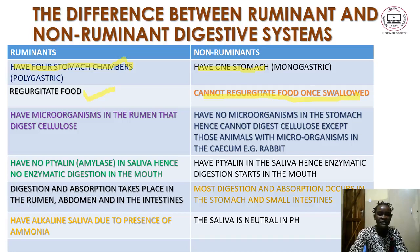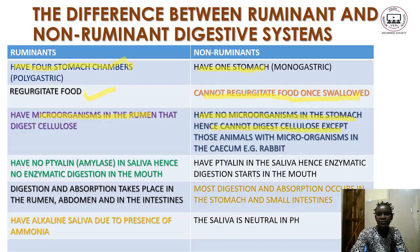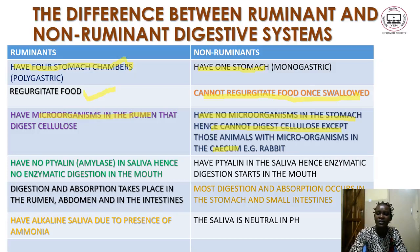Another difference is that in ruminant animals there are microorganisms especially in the rumen. These microorganisms help to digest cellulose and are present in the first stomach, the rumen. Non-ruminants do not have microorganisms in their stomach and hence cannot digest cellulose, except some non-ruminants with large caecum — like rabbits — where microorganisms are also present to help digest cellulose.